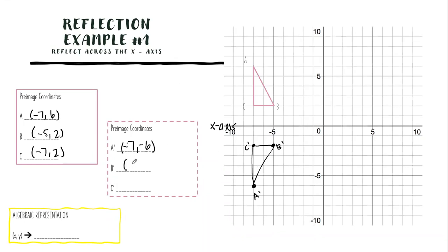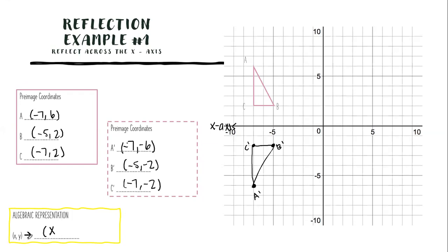Where's B prime? Negative five, negative two — perfect. Let's make observations. Looking at x-values: A to A prime is negative seven to negative seven; B to B prime is negative five to negative five; C to C prime is negative seven to negative seven. Nothing happened to the x — it stayed the same.